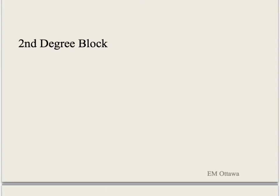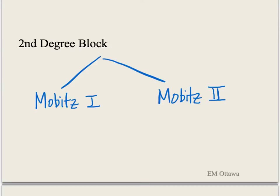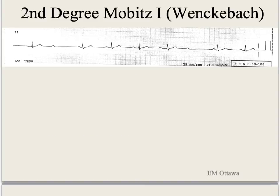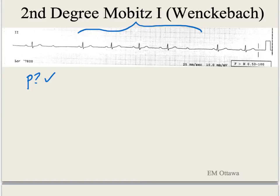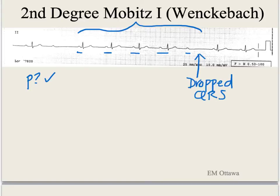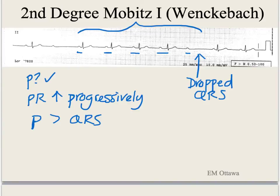Second degree AV block is divided into Mobitz type 1 and type 2. Mobitz type 1 is also known as Wenckebach, and the block is in or above the AV node. There are P waves. The PR interval progressively gets a bit longer, and eventually there is a P with a dropped QRS complex — this defines second degree Mobitz type 1 AV block. There is no one-to-one relationship between P and QRS because there are more P waves than QRS complexes. The RR interval is irregular and the QRS complexes are narrow.